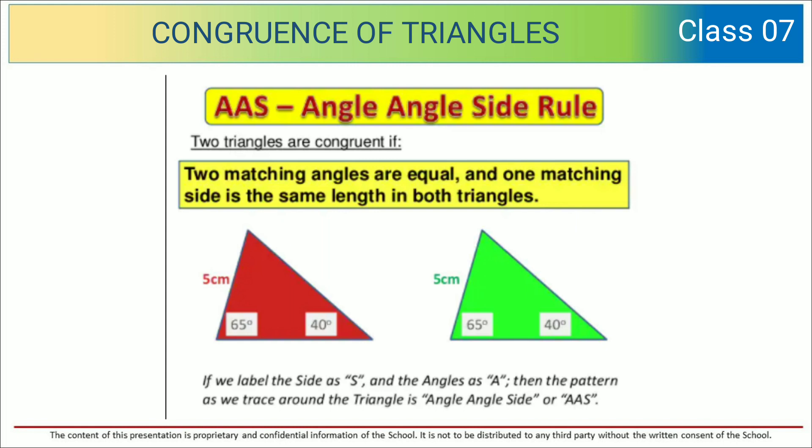If we label the side as S and the angle as A, then the pattern as we trace around the triangle is Angle-Angle-Side, or AAS.